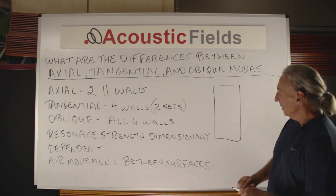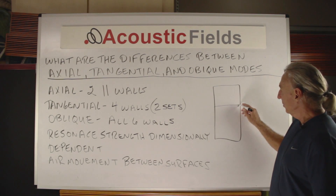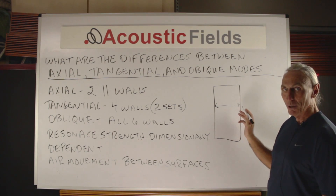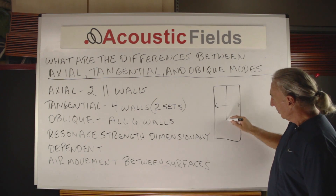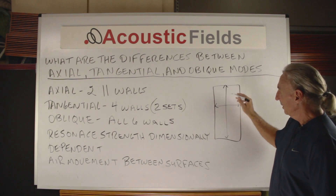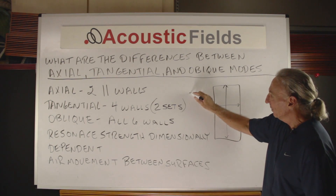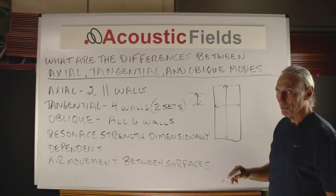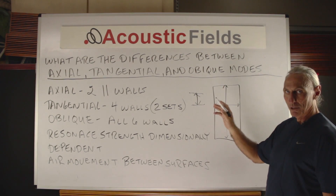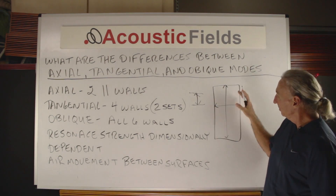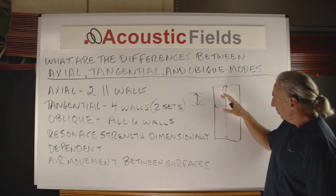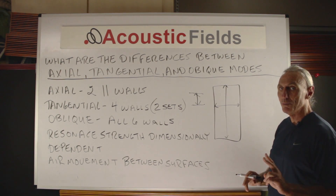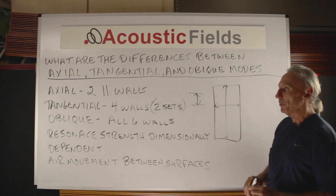The axial modes are the pressure areas that occur between two parallel surfaces. So we could have pressure between two sidewalls — we have pressure here because those are two parallel surfaces. And then don't forget about the floor and the ceiling; we have pressure that exists between those too. Axial modes are the pressure areas that occur between two parallel surfaces — two parallel surfaces, that's the key word here.